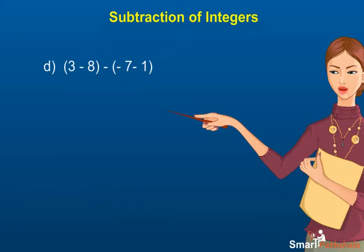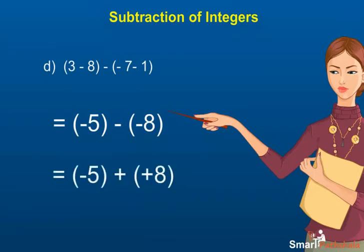(d) We first solve the parentheses: 3 - 8 = -5 and -7 - 1 = -8. Now, -5 - (-8) = -5 + 8 = 3.